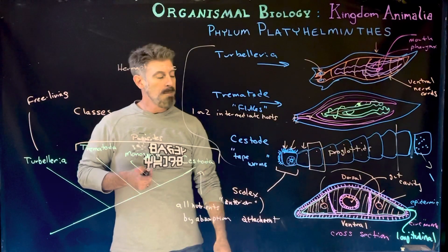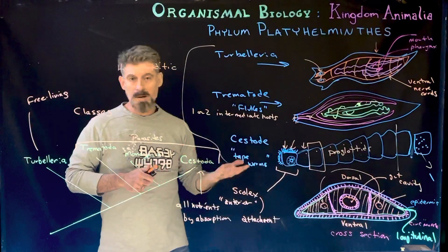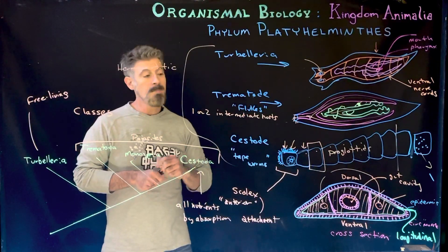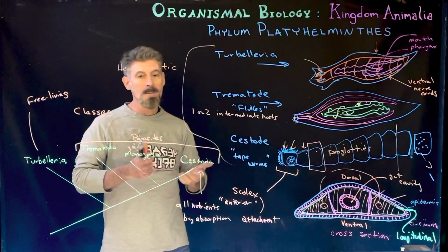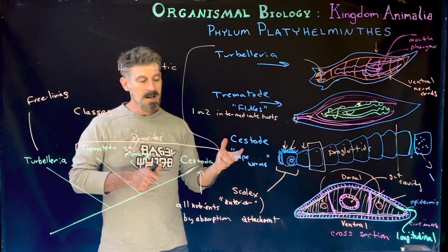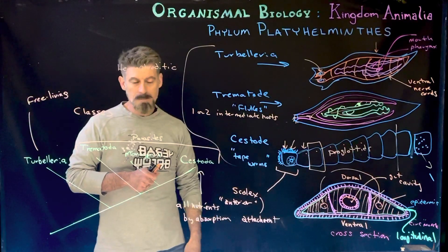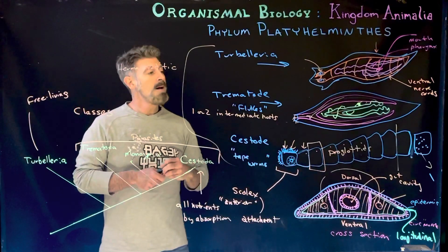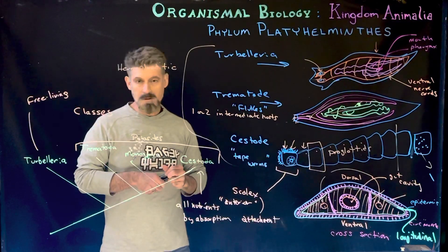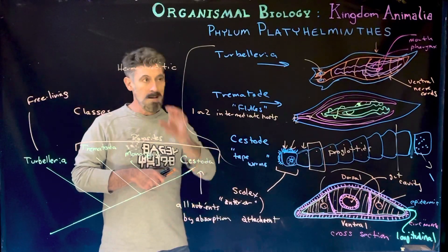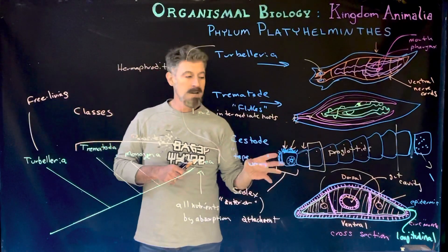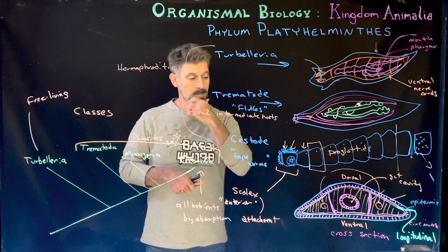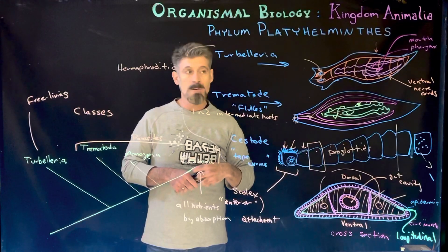People can have tapeworm infections and not really be harmed if it's just a single individual or a few — the nutrients removed would probably not be significant. People become very ill when they have many tapeworms, causing blockages of the gut and stealing vital nutrients, leading to vitamin and nutrient deficiencies that cause other problems. The life cycles of these organisms are very interesting but also very complicated and beyond the scope of this course — we might revisit them in a future advanced course.